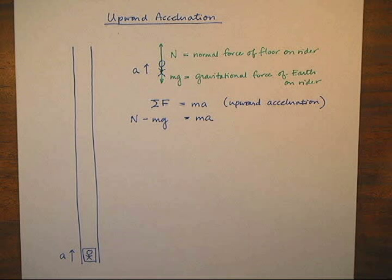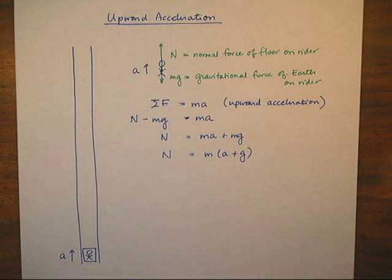Upward is the positive direction. The weight comes into the equation with a negative sign, minus mg, to indicate that its direction is opposite to the direction of acceleration. The value of g, gravitational acceleration, is positive 9.8 meters per second squared.